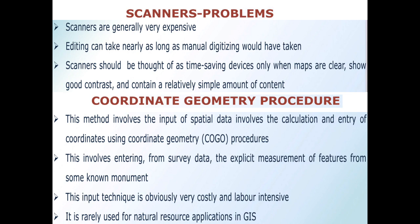The coordinate geometry procedure method involves the input of spatial data by calculation and entry of coordinates using coordinate geometry — COGO procedures. This involves entering survey data with explicit measurement of features from some known monument. This input technique is very costly and labor intensive, and is rarely used for natural resource applications in GIS.